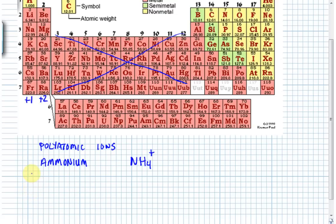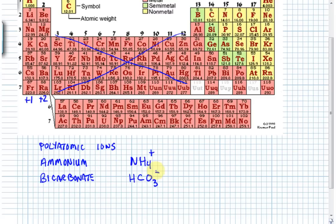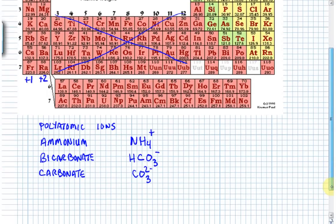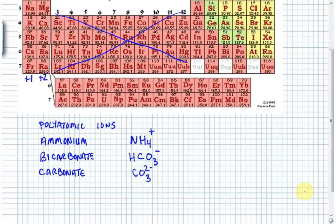The rest of the polyatomic ions are negatively charged — they're anions. Starting with bicarbonate: bicarbonate has the formula HCO₃⁻ with a minus 1 charge. Next is carbonate: CO₃²⁻ with a minus 2 charge. Don't get bicarbonate and carbonate confused — they sound similar and have similar formulas, but they are different.